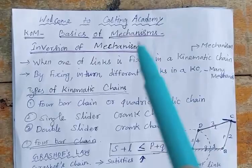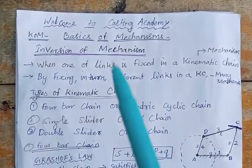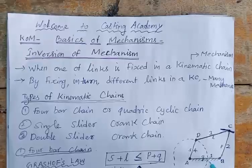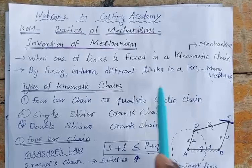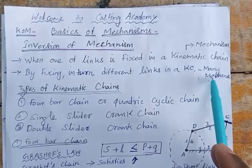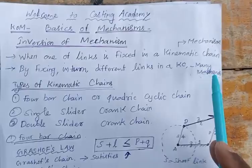In any mechanism, one of the links is called the frame — that is the fixed link. By fixing different links in turn in a kinematic chain, we obtain many different mechanisms.